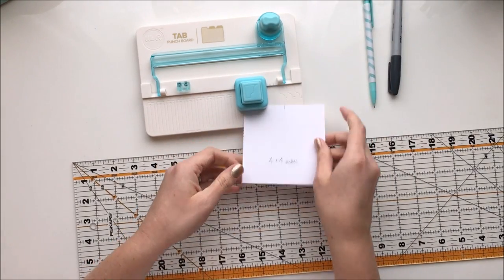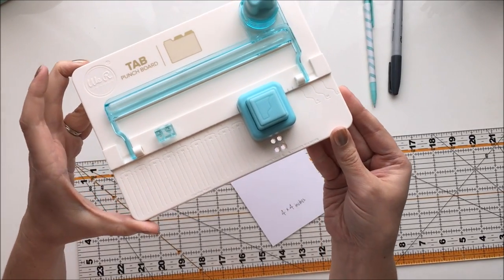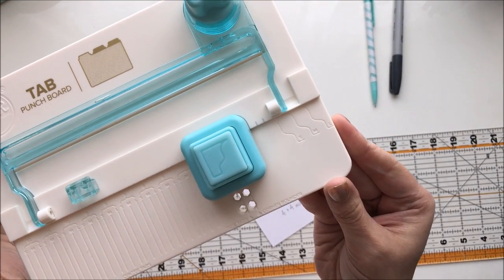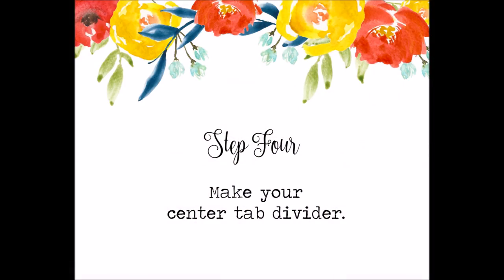And now you've got two little Sharpie marks and you know exactly where the center of all the tabs are for small, medium, and large tabs no matter what size your paper is.